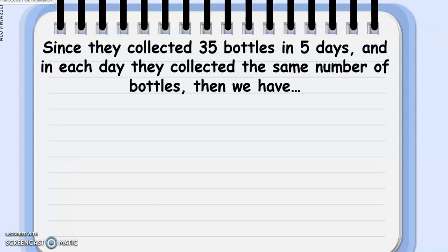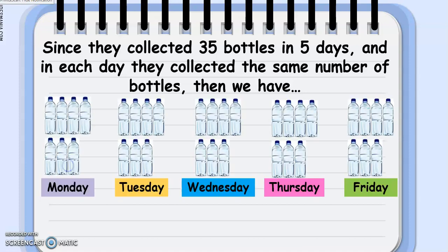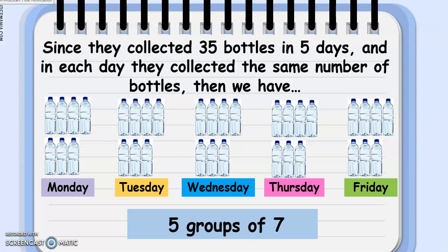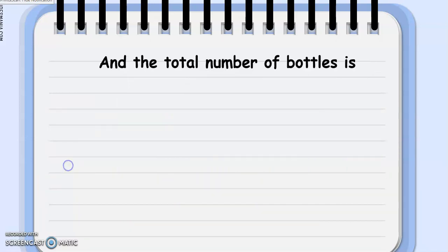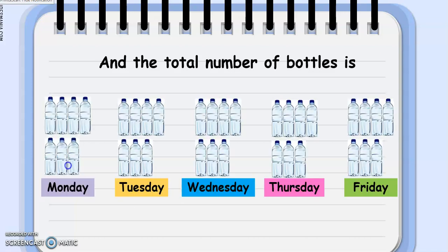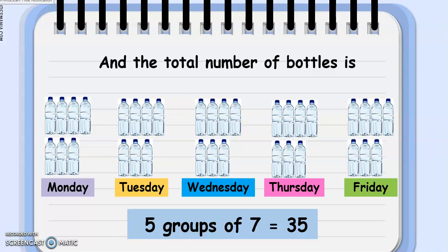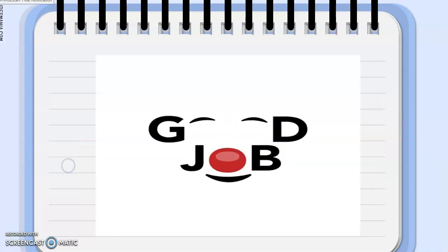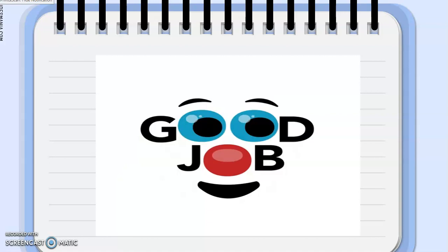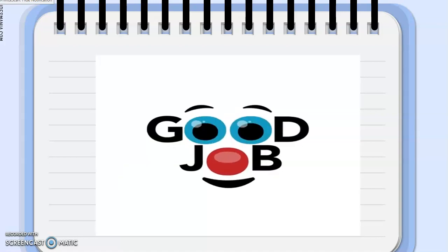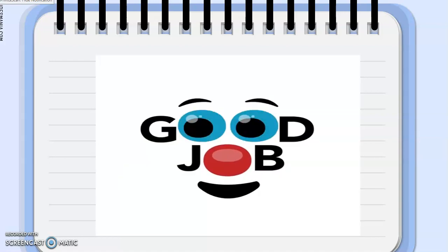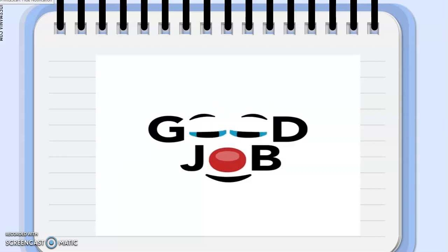Now, since they collected 35 bottles in 5 days, and in each day they collected the same number of bottles, then we have 5 groups of 7. And, the total number of bottles is 5 groups of 7 is, of course, 35. There you go. Good job, my dear grade 1. Now, you already know how to separate groups of objects into equal quantities. Good job!